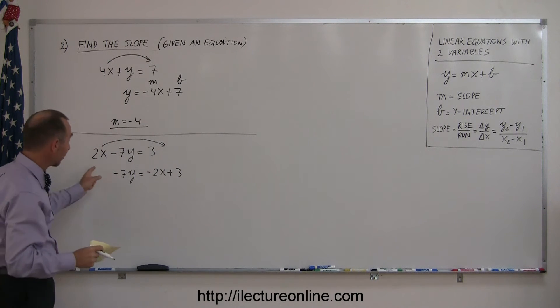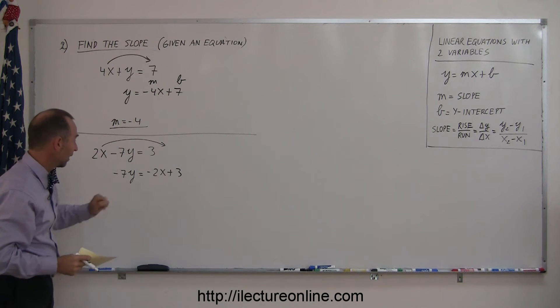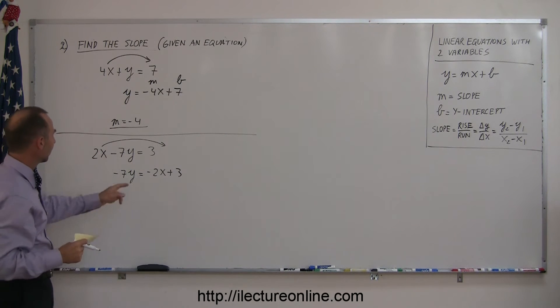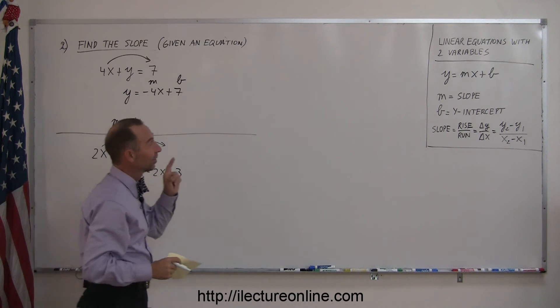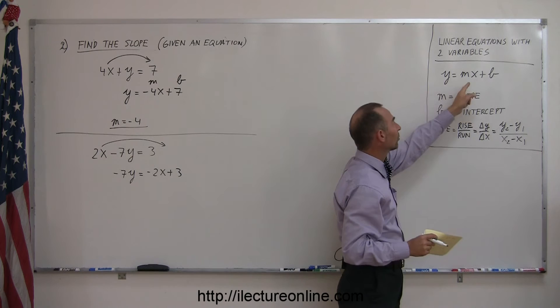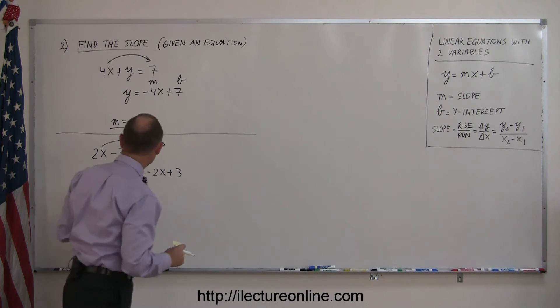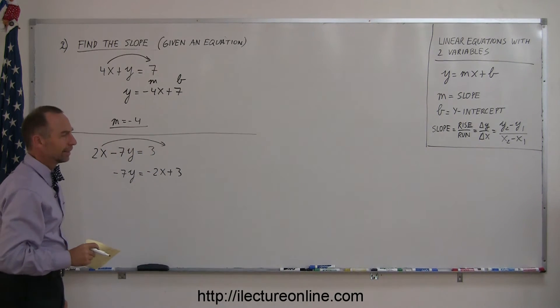Now we have minus 7y equals minus 2x plus 3. Remember, when you move anything across the equal sign, you must change the sign. Now you say okay, I'm done, there's my slope. Oh, not so fast, because it doesn't exactly look like what you have over here. It has to be y equals mx plus b, not negative 7y.